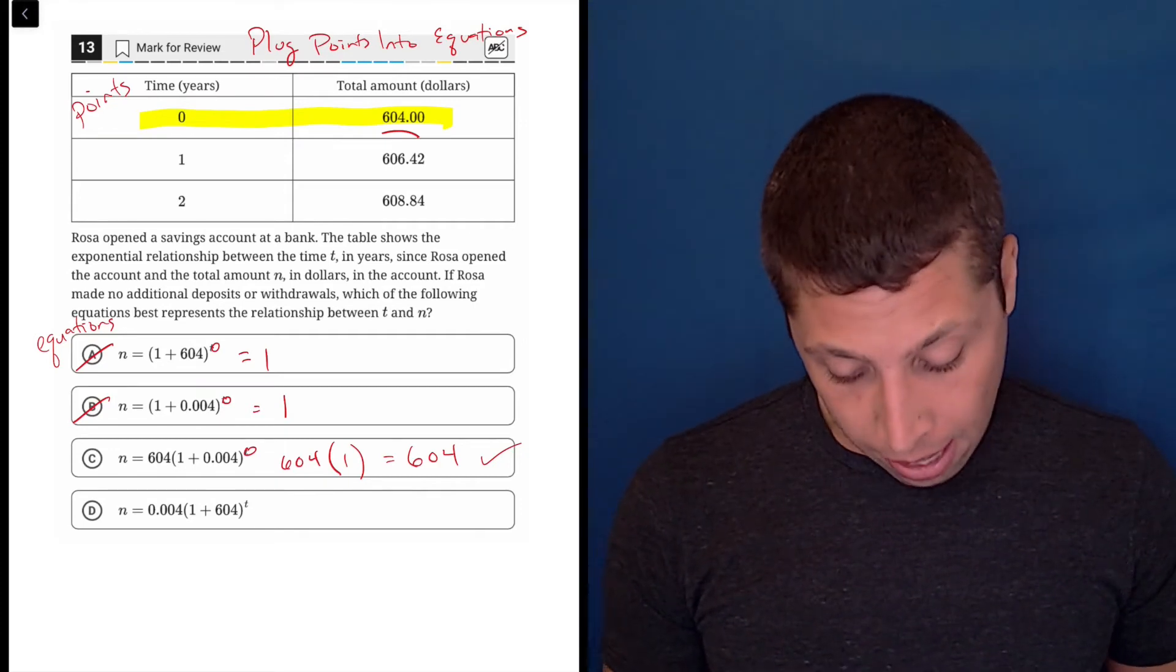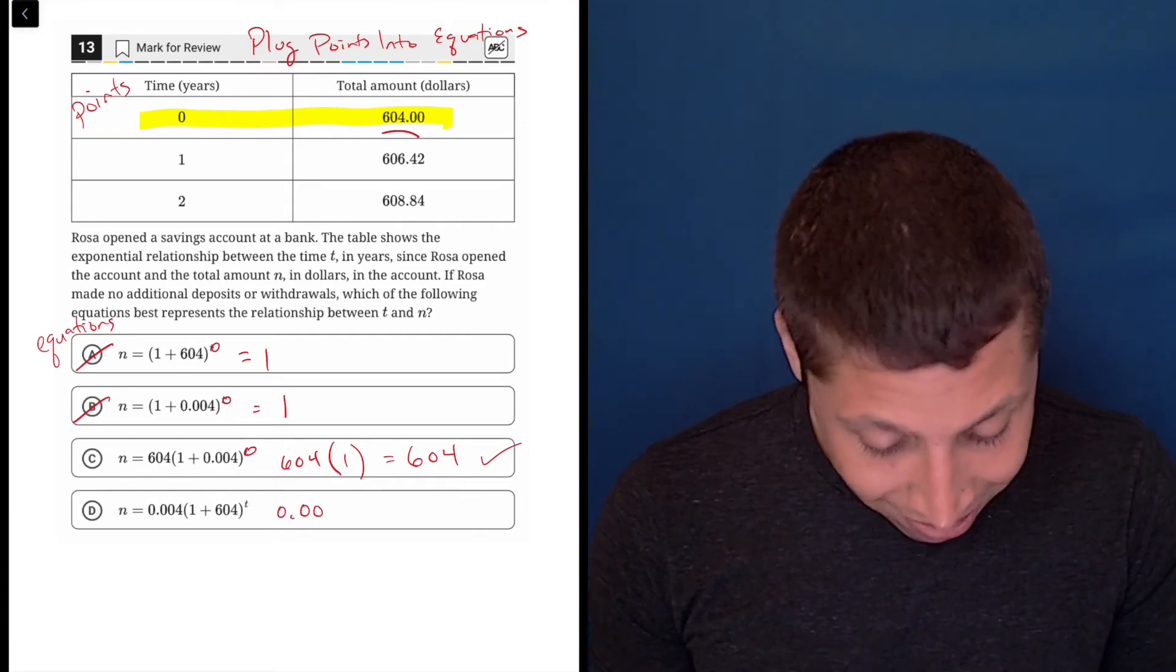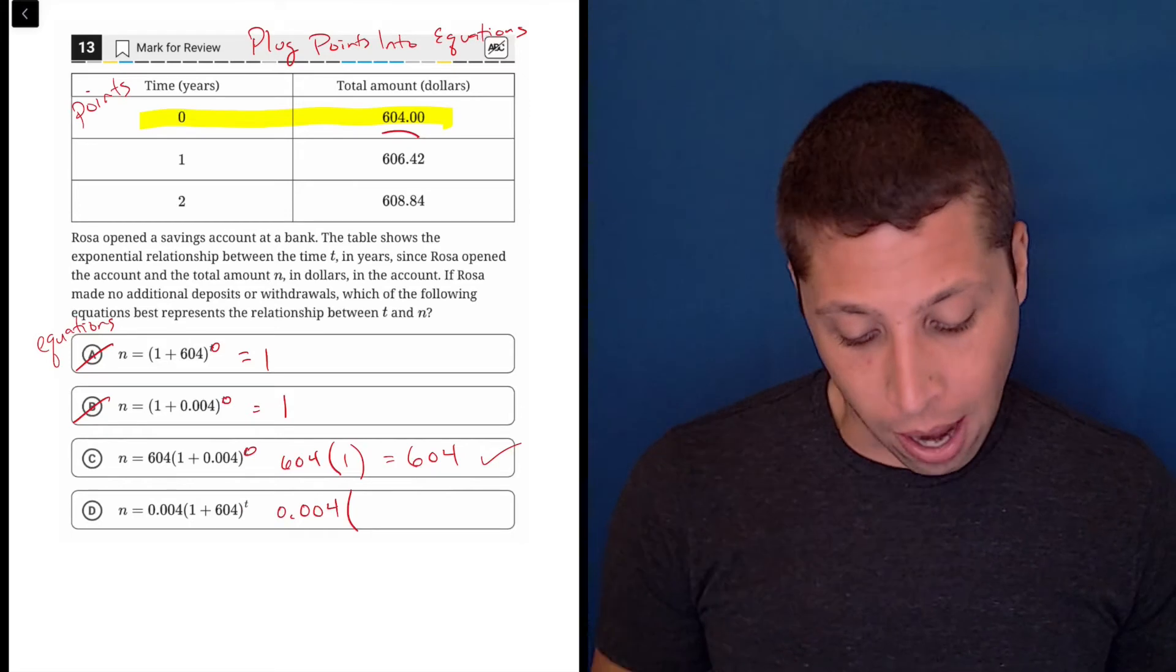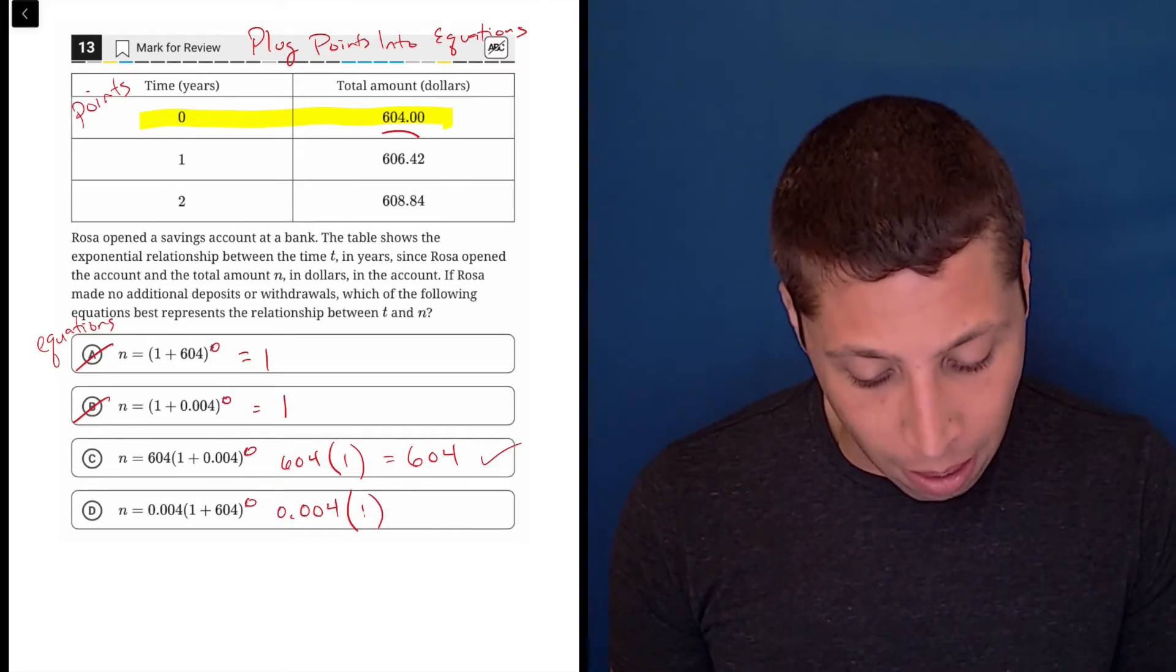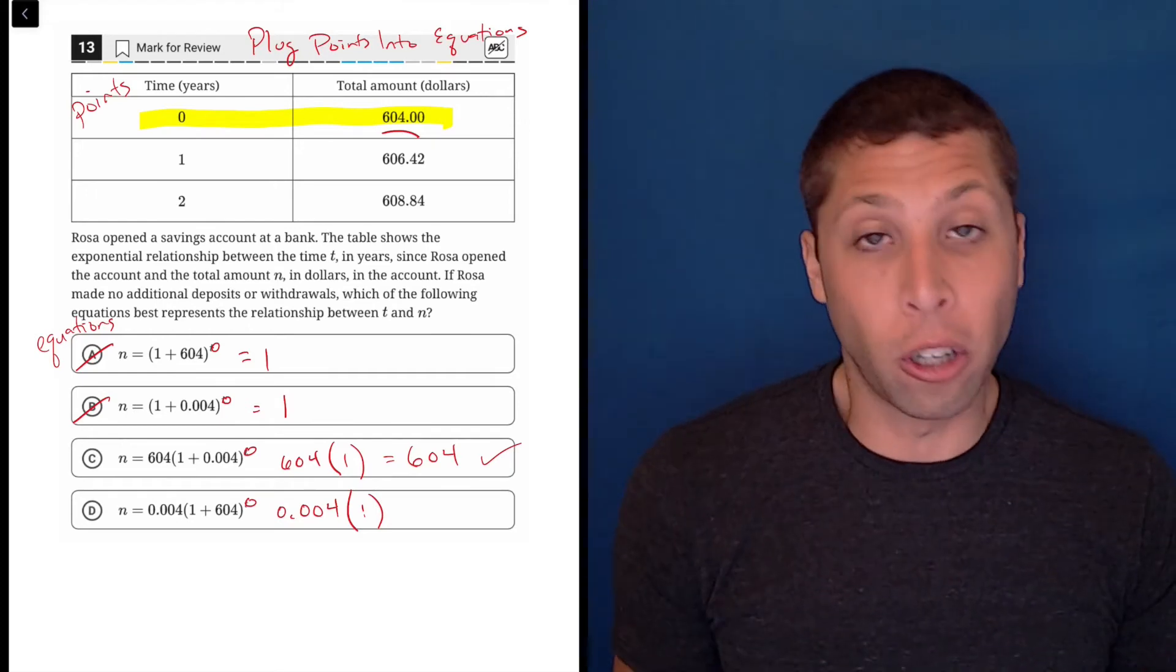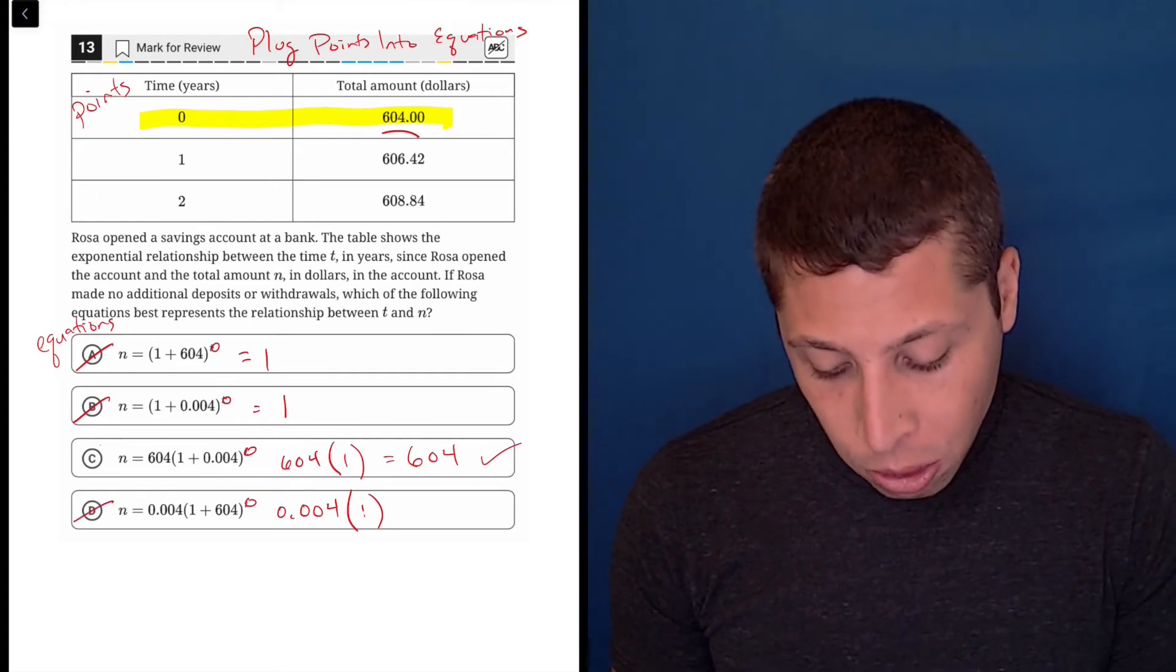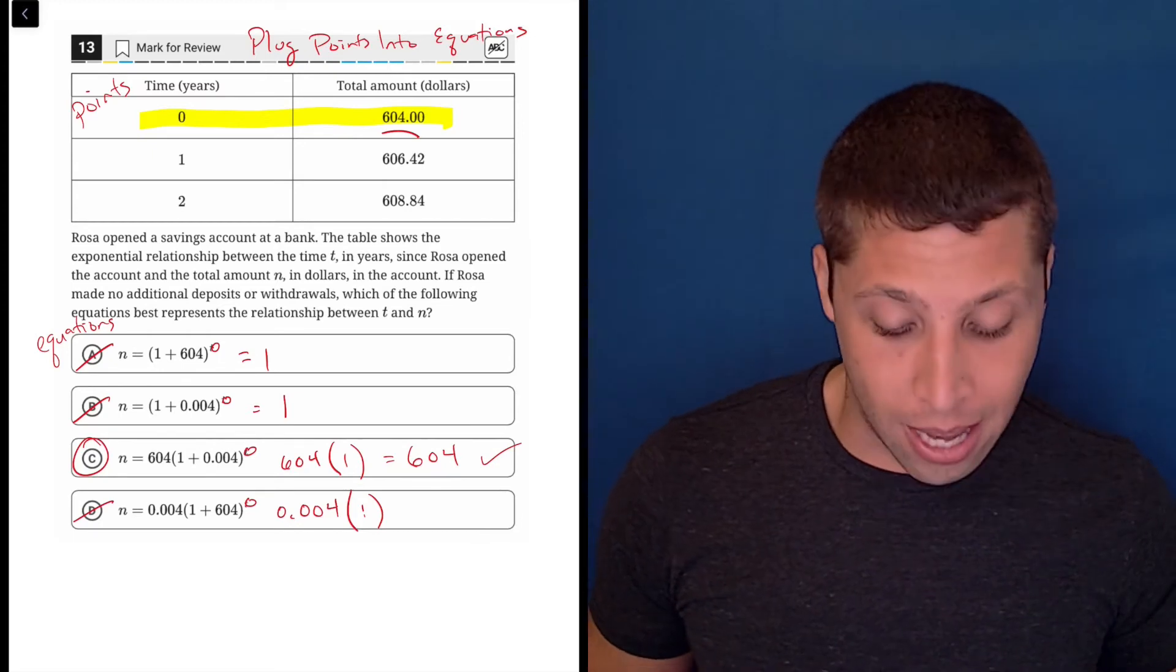Let's try D just in case. So this would be 0.004, which is on the outside. And then the inside, again, doesn't matter what it is. If I raise it to the 0 power, it's going to become 1. So this is just 0.004, so that is wrong, and choice C is the answer.